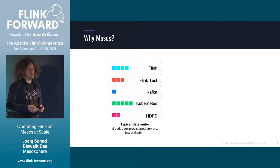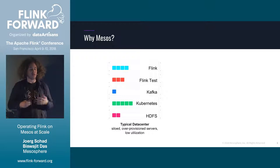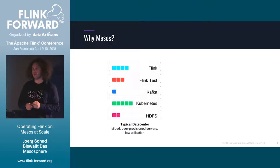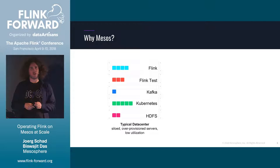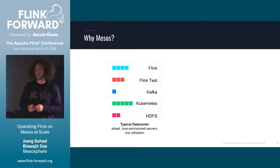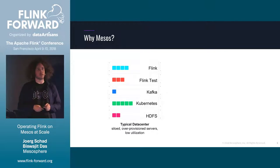Why Mesos? Typically we see clusters where you don't only want to run a single workload — you might run two Flink sub-clusters, one production and one for testing, plus Kafka, Kubernetes, and HDFS. Previously, people statically partitioned their cluster: the first five nodes for one Flink cluster, the next eight for another. From an operations perspective this becomes really difficult, and it's also a waste of resources since each sub-cluster is provisioned for maximum workload.